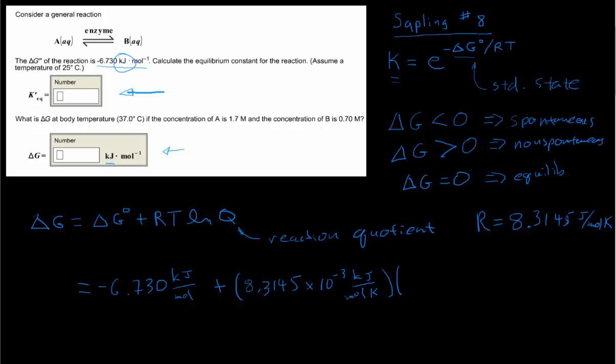And now T, our Kelvin temperature. So we're at 37 degrees Celsius, and remember we add 273 to that to convert to Kelvins. And so that's 310 Kelvin for our temperature.